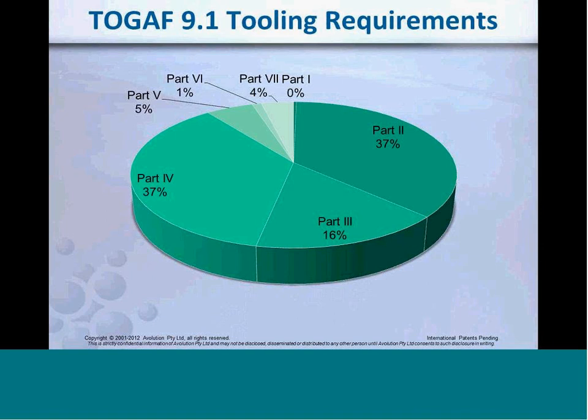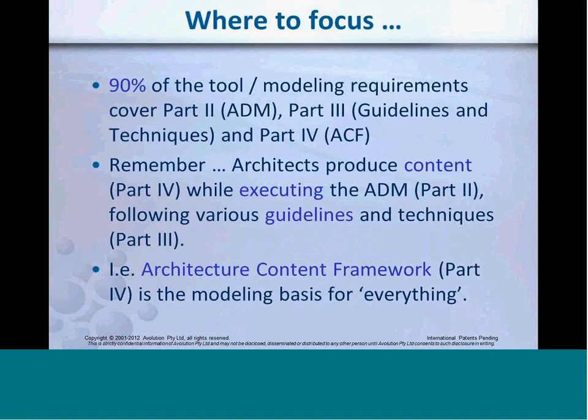I've alluded to those 700 requirements — this is a summary of the tool conformance requirements as a pie chart. Parts 2 and 4, which are the architecture development method and the content framework, along with Part 3 on guidelines and tools, account for the bulk of the requirements from a tooling point of view — that's the best part of 90%. So really, that supports the focus around modelling and those parts of the standard.